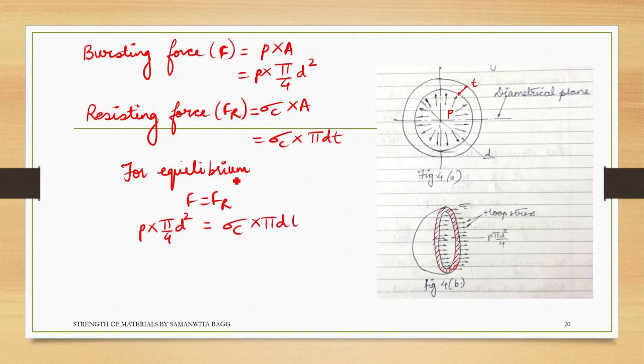Into pi d t. Pi gets cancelled and one diameter gets cancelled, so what remains for sigma_c is pd upon 4t. The formula for sigma_c for thin cylinder was pd upon 2t. Now here there is nothing called sigma_l, so you can just say that this is equal to sigma_l and this is nothing but sigma in general.